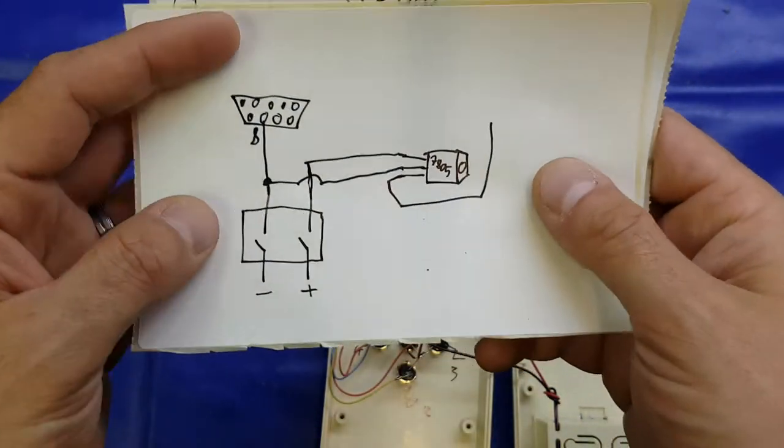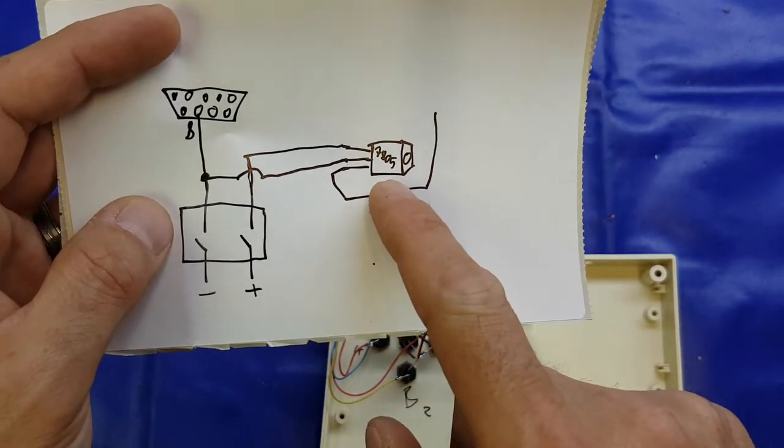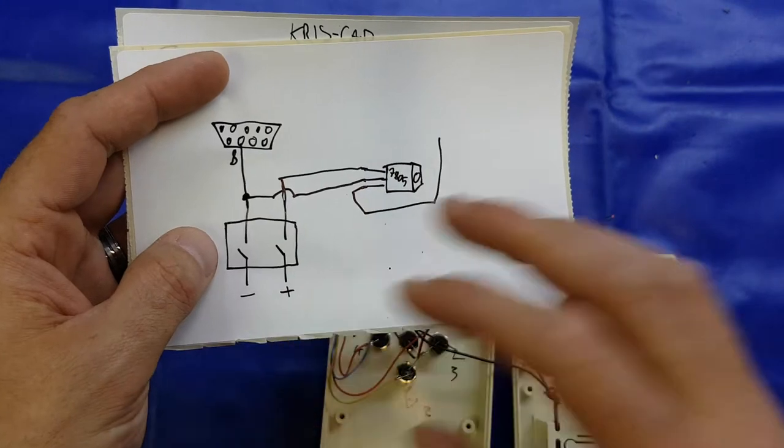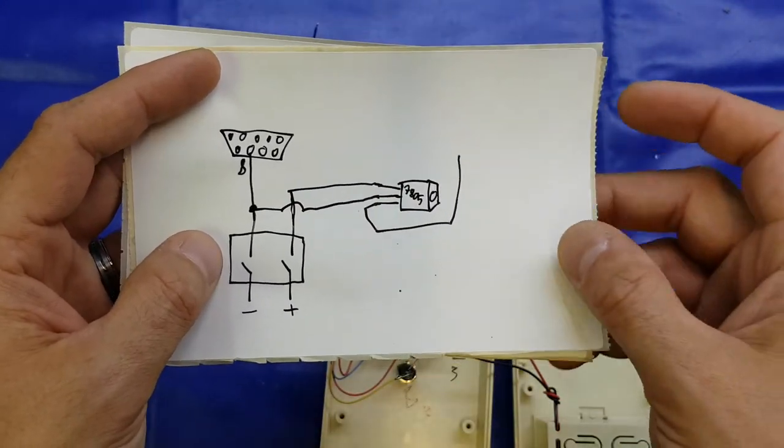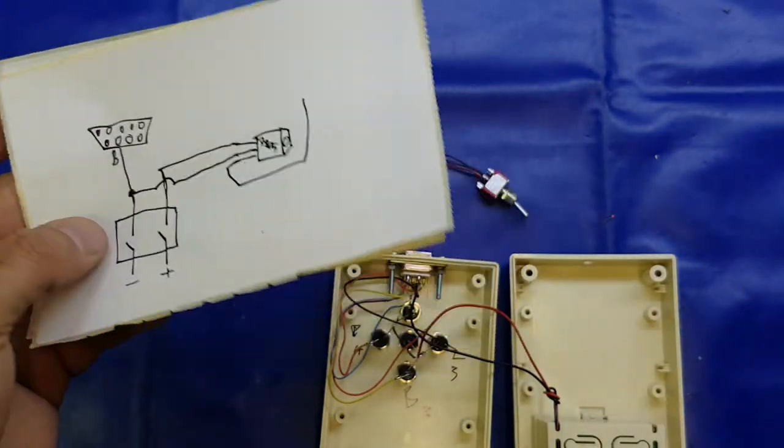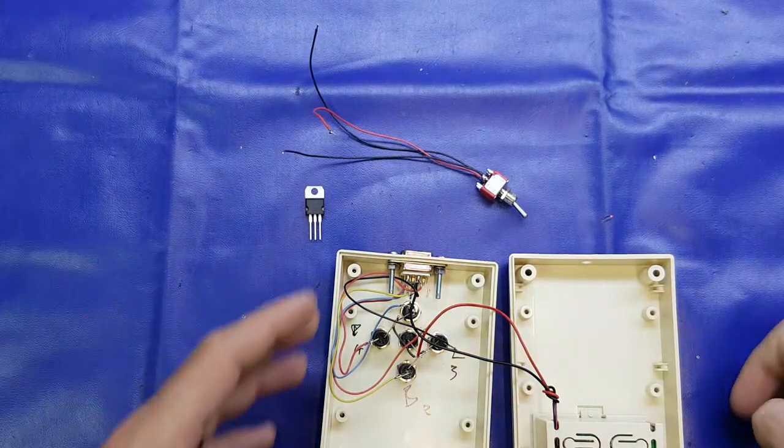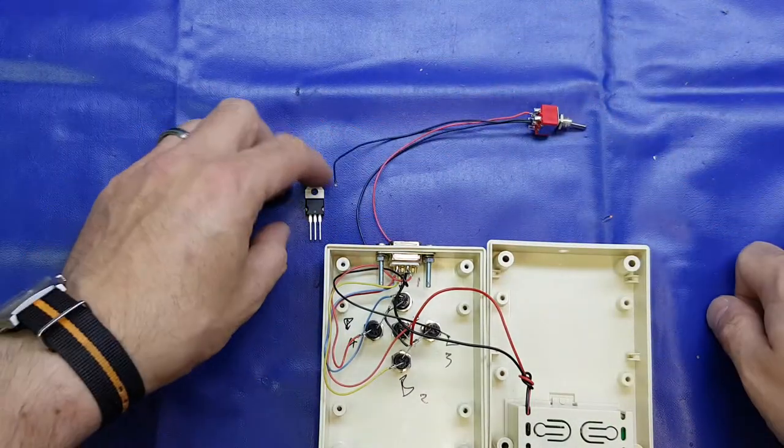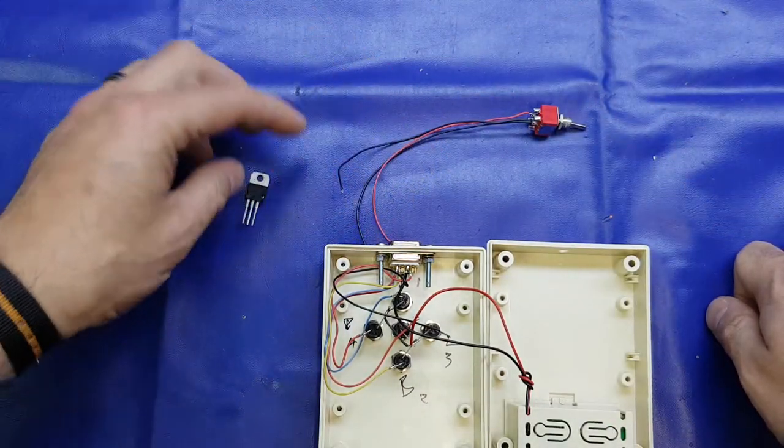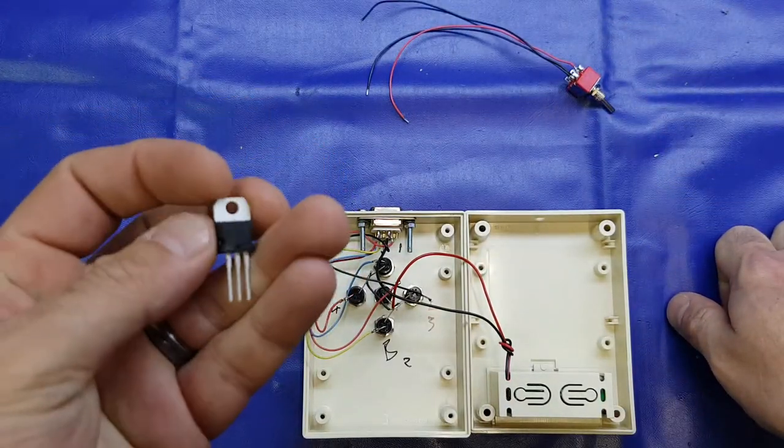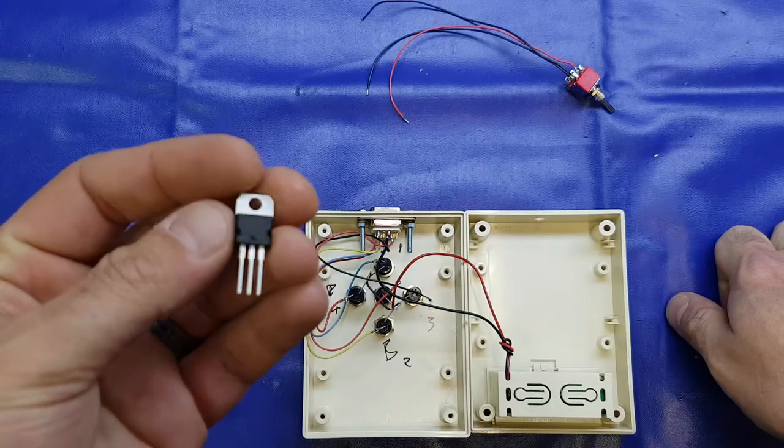So all we're going to do tonight is pop in the 7805 through a double pole single throw switch because that's going to completely isolate the voltage regulator from that 9 volt supply. We'll just bodge it in here and it should work quite well. The reason for using that switch is that it's going to fully isolate the voltage regulator.